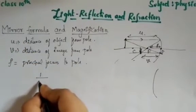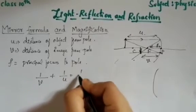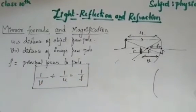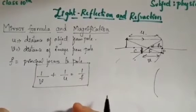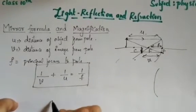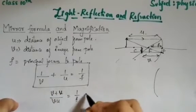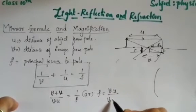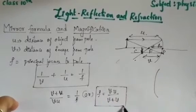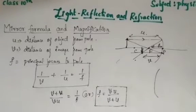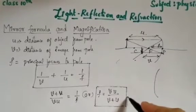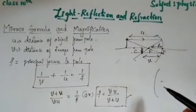Using these three terms, the relation is: 1/v + 1/u = 1/f. For your syllabus, no derivation is needed — you only need to know this formula. You can also simplify it by taking the LCM: f = (v × u) / (v + u). That is, f equals image distance times object distance divided by image distance plus object distance.